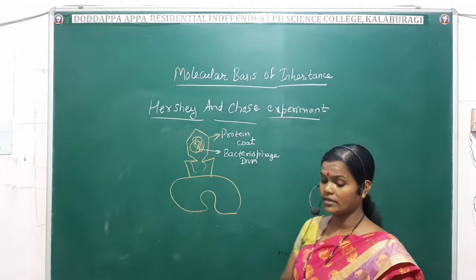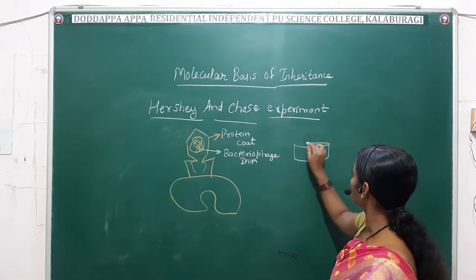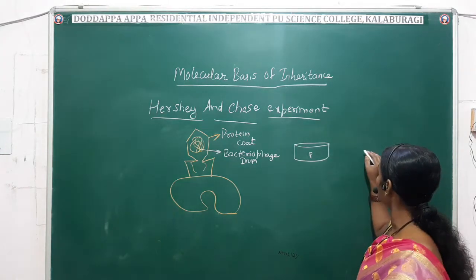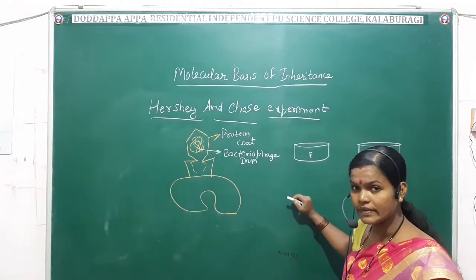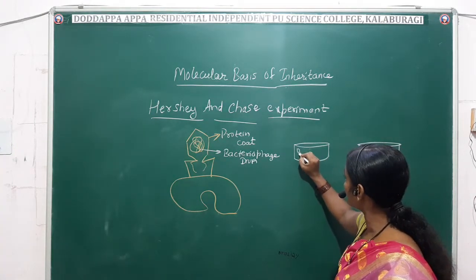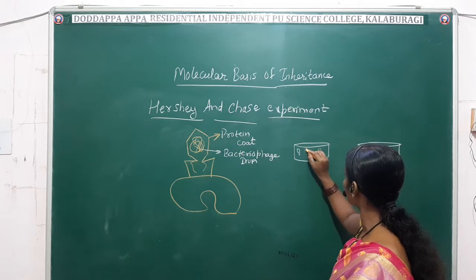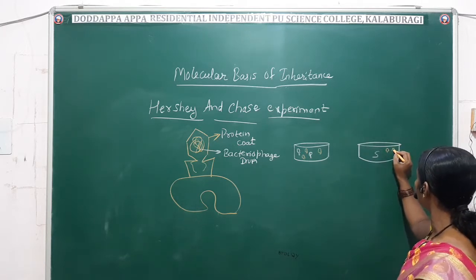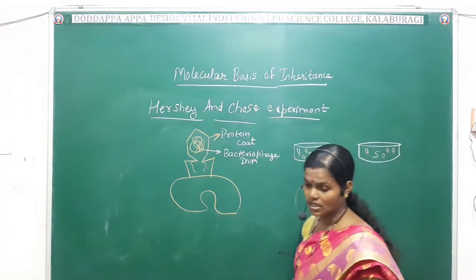To prove this, they took two separate culture media. In one culture media there is radioactive phosphorus, and in the other culture media there is radioactive sulfur. Some bacteriophages are cultured in radioactive phosphorus and some bacteriophages are cultured in radioactive sulfur — separately like this.